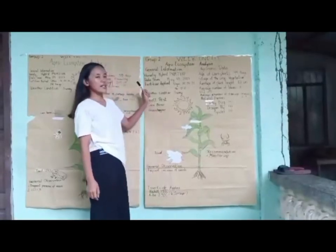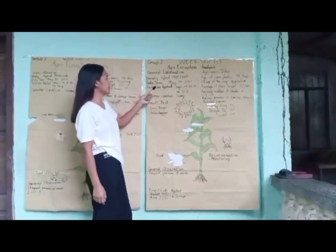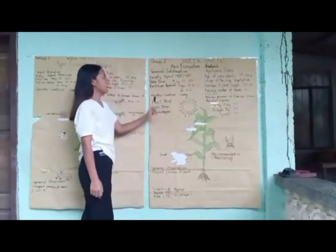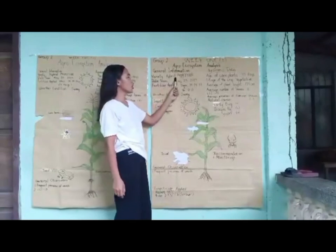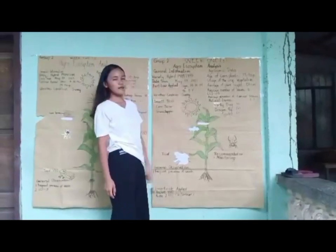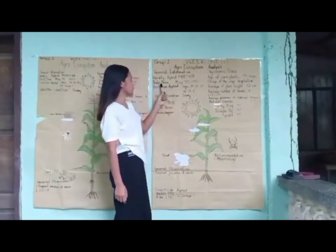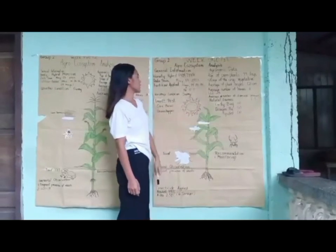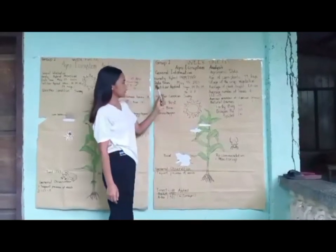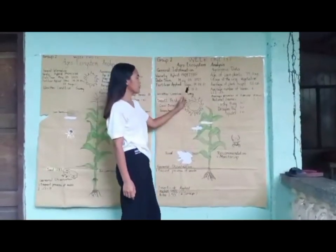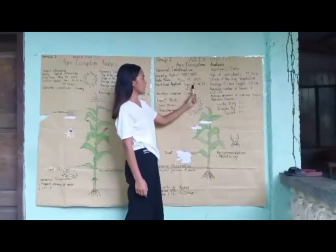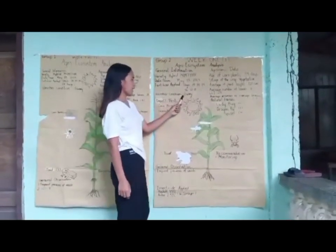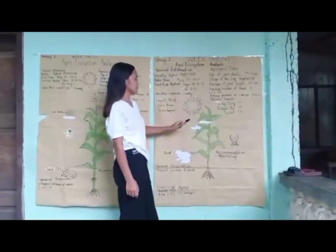This is the gathered data on Week 1. General information: Variety is Hydrate 3409-7-YHR. Take zone: May 3, 2023. The fertilizer applied is urea which is 46-0-0 and complete. Weather condition on that day is sunny (maaraw).